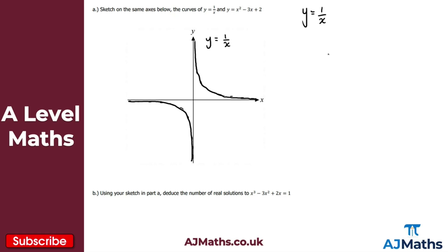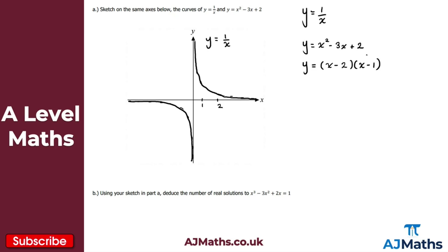Now let's sketch the quadratic: y equals x squared minus 3x plus 2. I want to see if this factorises — and it does. I get y equals x minus 2 times x minus 1. That means we have two solutions along the x-axis: x equals 1 and x equals 2. And the y-intercept is positive 2 when x equals 0.